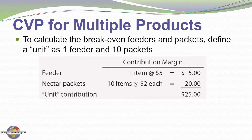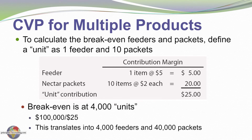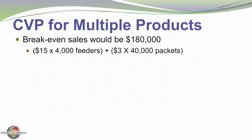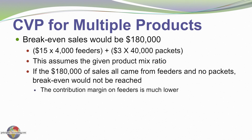So the unit contribution margin is $25, and we would need to sell 4,000 units to break even — that is our $100,000 of fixed cost divided by the $25 unitized contribution margin. This translates into break-even sales of $180,000: 4,000 feeders at $15 each plus 40,000 nectar packets at $3 each. This assumes the given product mix ratio holds true.